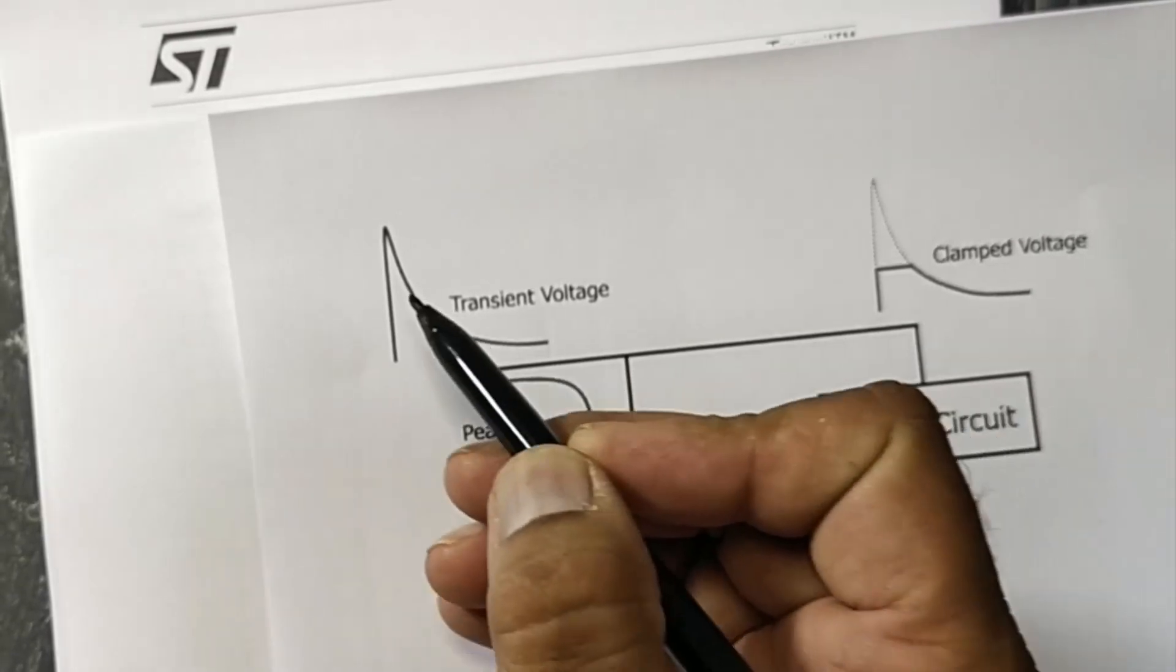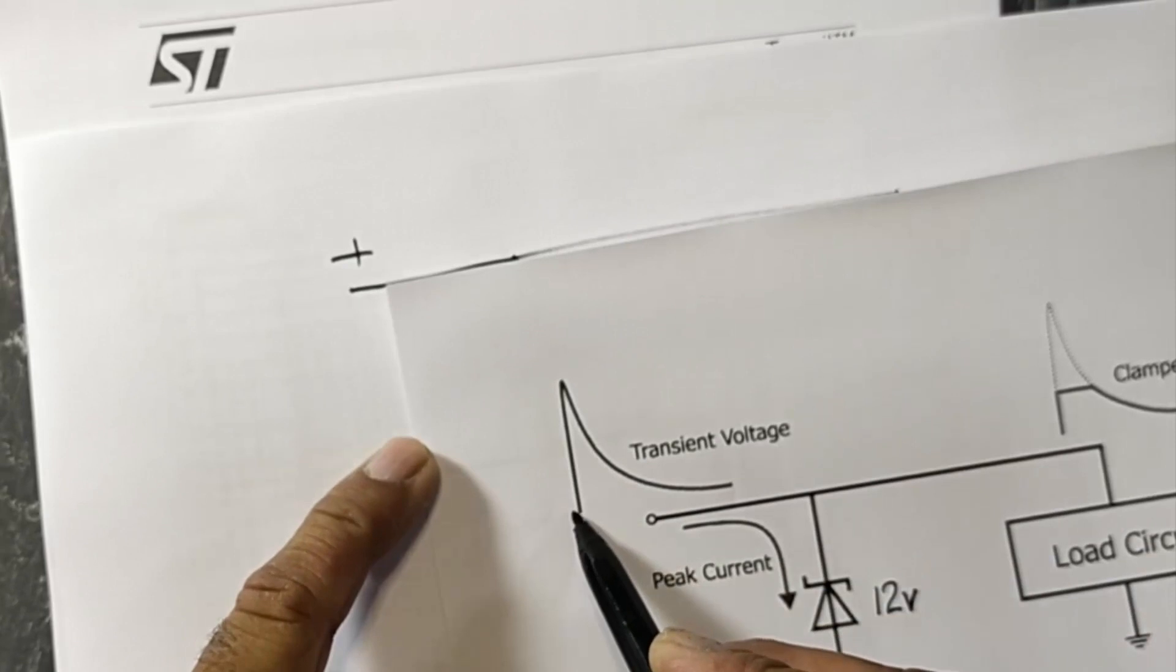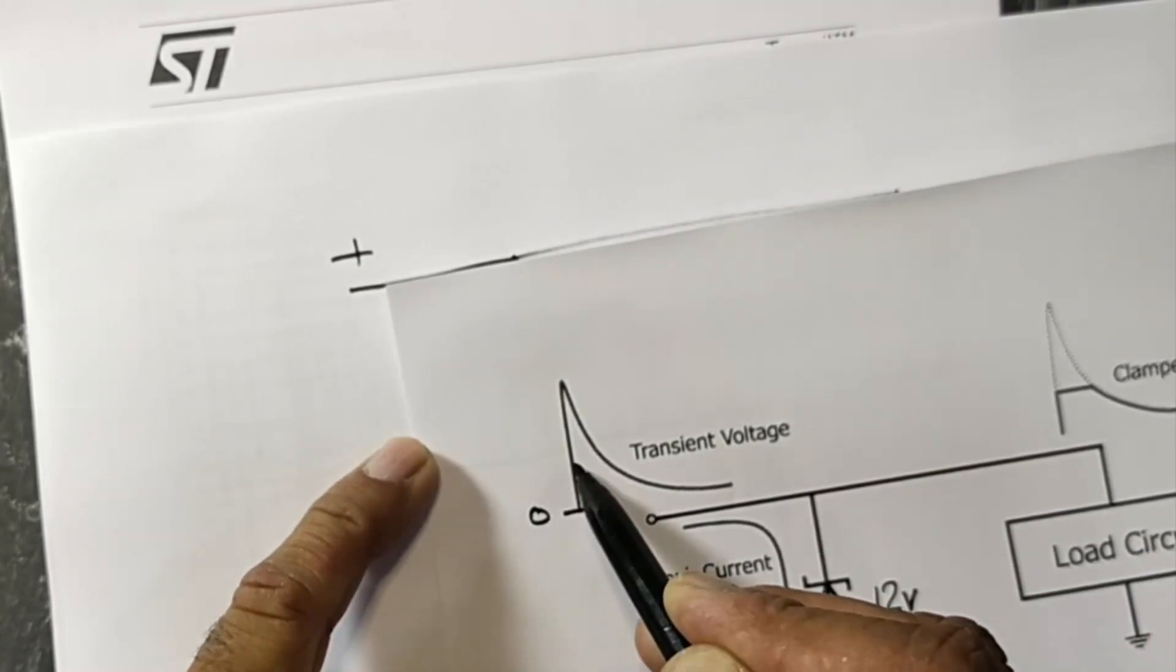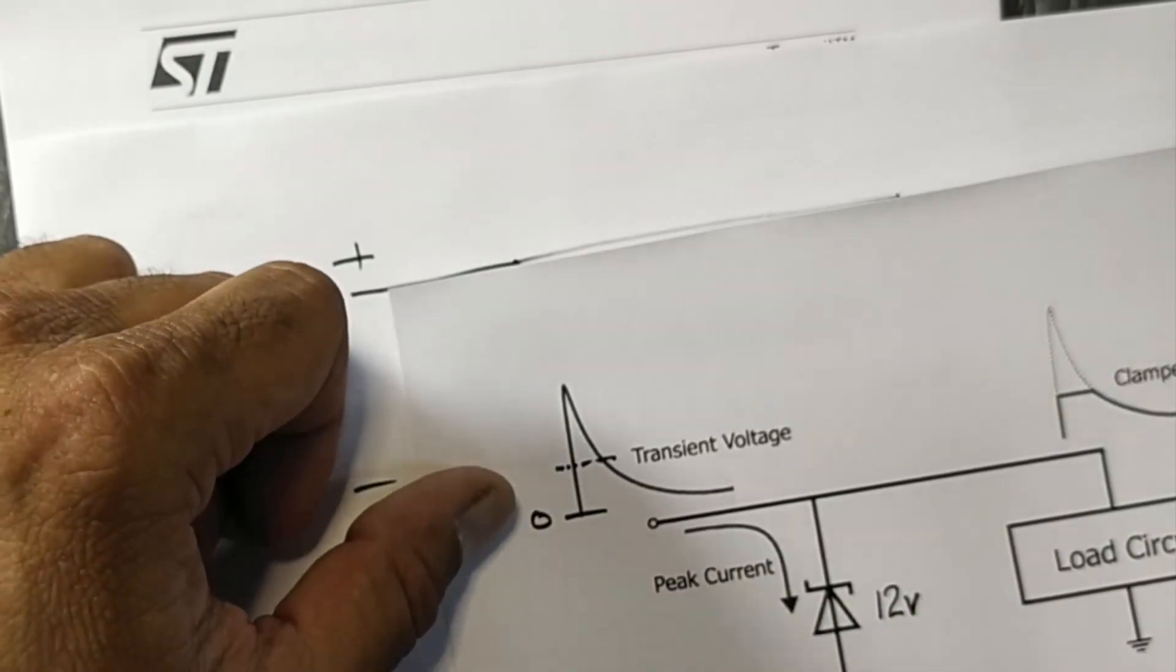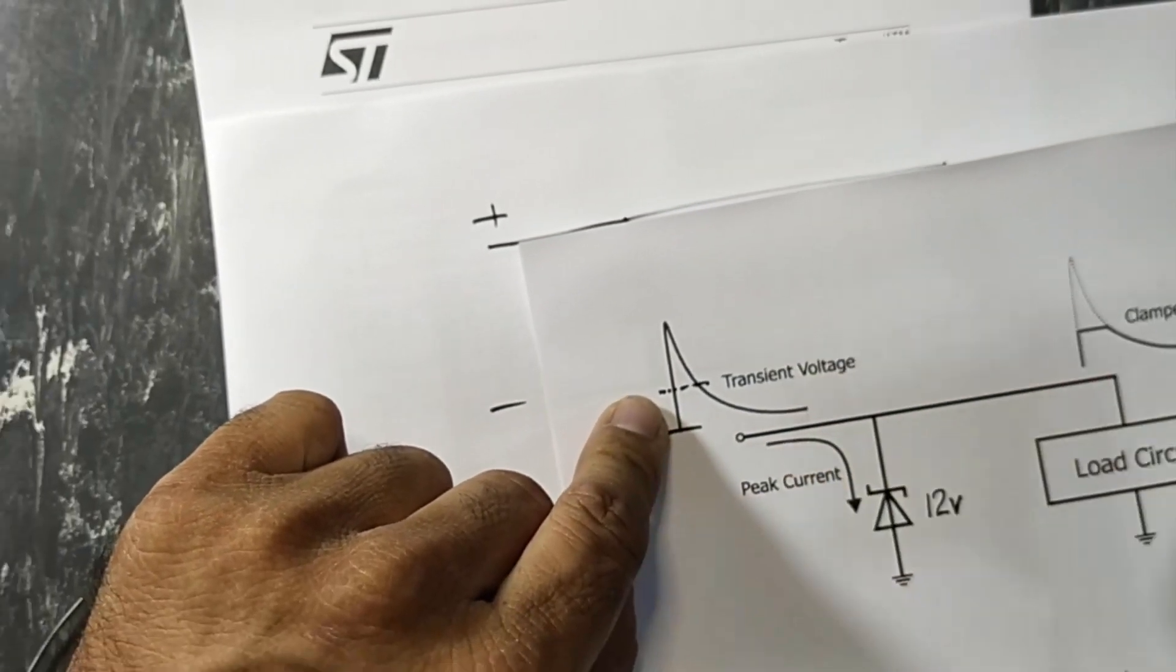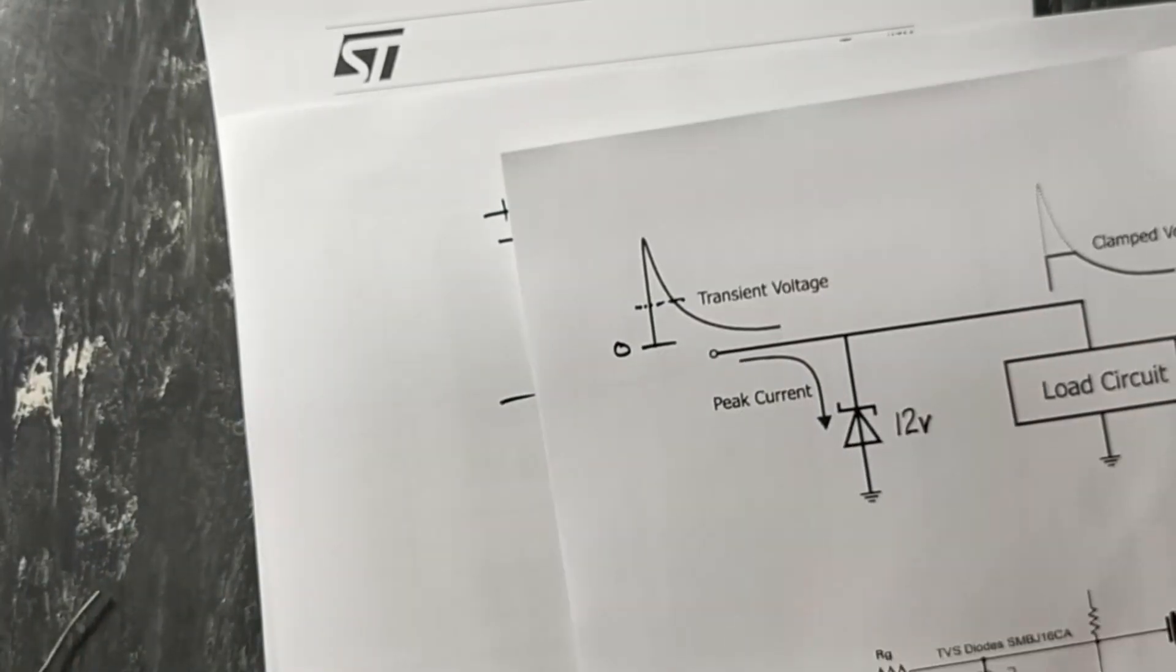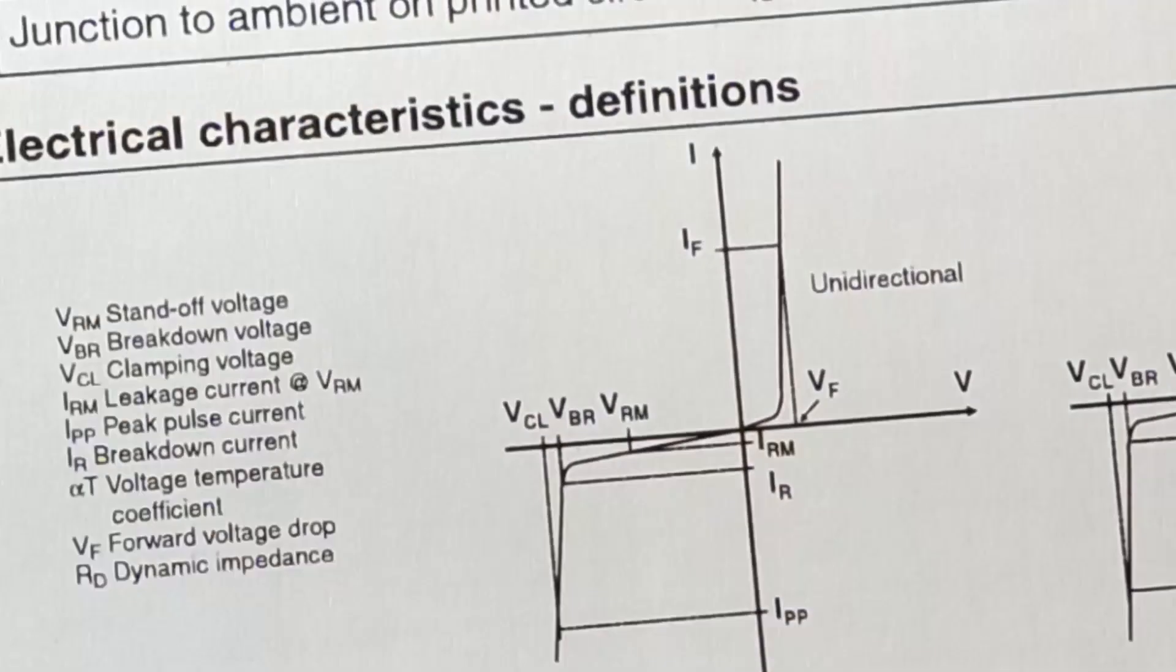If it is a 12 volt TVS diode, from 0 to 12 volt this is its limit. At this limit it will start conduction, it will come in zener breakdown. If we see its curve...